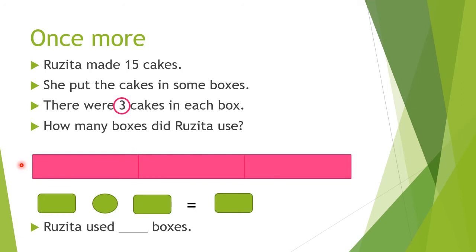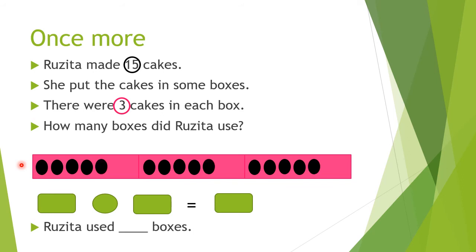Next, we get the bigger number and draw dots same as the bigger number. Counting 1, 2, 3, 4, 5, 6, 7, 8, 9, 10, 11, 12, 13, 14, 15. So 15 dots done.